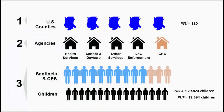The NIS-4 sample was designed to be nationally representative. Data were collected within 110 PSUs at the county level. Sentinels — professionals at community agencies such as health services, school and daycare, law enforcement, housing, shelter, and other agencies — prospectively completed forms on children believed to be maltreated as they were encountered during two focused three-month reference periods. CPS data were retrospectively collected for the same timeframe.